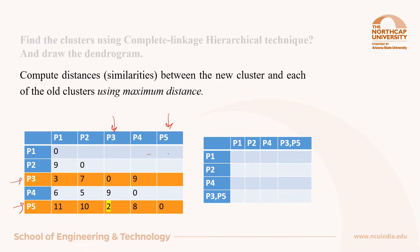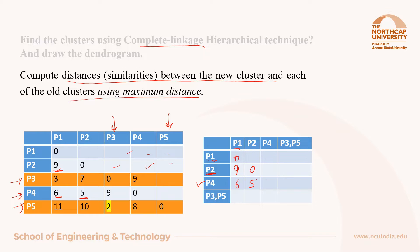Some of the entries are left blank here in the matrix because this is a symmetric matrix. Now compute the distances between the new cluster and each of the old clusters using maximum distance or complete linkage hierarchical technique. Distance of P1 from P1 is 0. Distance of P2 from P1 is 9, from P2 it is 0. Distance of P4 from P1 is 6, from P2 is 5, and from P4 it is 0. The distance of merged cluster P3P5 from P1 will be maximum of 2, 3, or 11 — so 11 will come here as it is the maximum.